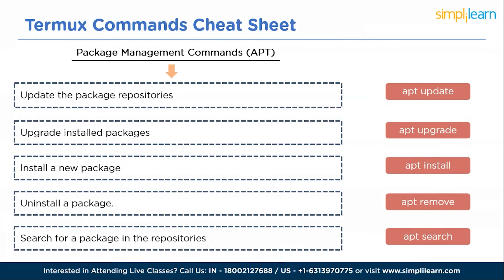Networking commands: 'ping' to test connectivity of a server or website; 'ifconfig' or 'ip' to display network interfaces and configurations; 'netstat' to show network statistics such as open ports and active connections. Process management commands: 'ps' to display currently running processes; 'kill' to terminate a running process. Task automation commands: 'bash' or 'sh' to run a Bash script; 'python' or 'python3' to execute Python scripts.